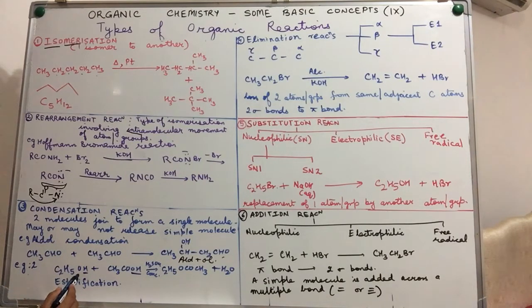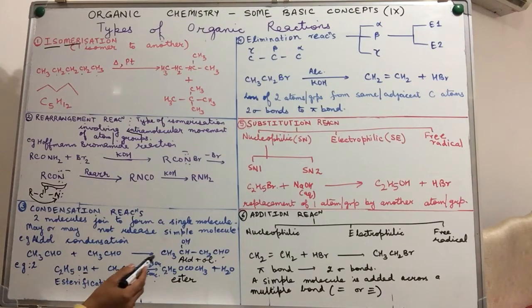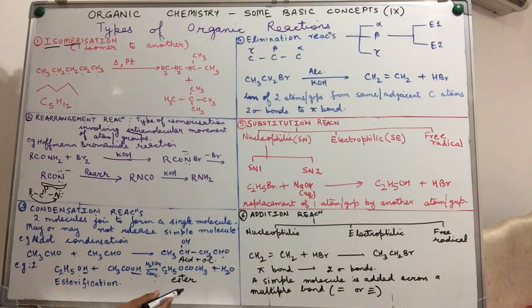Taking the second example, esterification, wherein an alcohol reacts with a carboxylic acid in the presence of concentrated H2SO4 to give us a product which is known as ester. These are the sweet-smelling compounds that you will observe when you do chemical tests in the laboratory also. How do we test an alcohol? This is a very simple reaction which is used. An alcohol, when treated with a carboxylic acid, gives us a sweet-smelling product that is an ester. If you notice over here, a simple molecule, that is water, is released as a by-product. So a condensation reaction may or may not release a simple molecule.